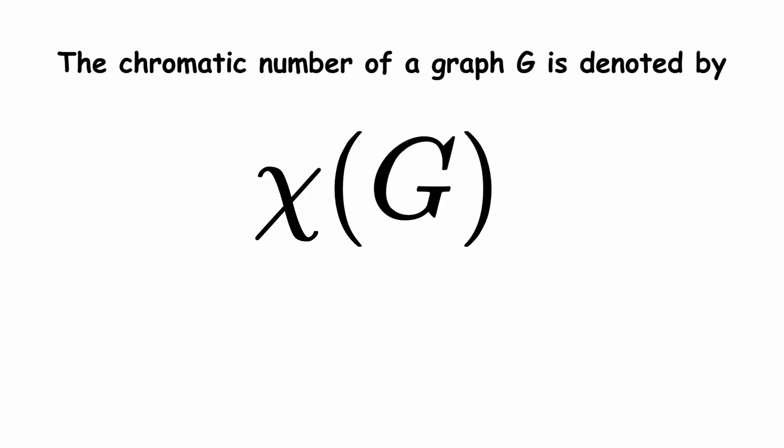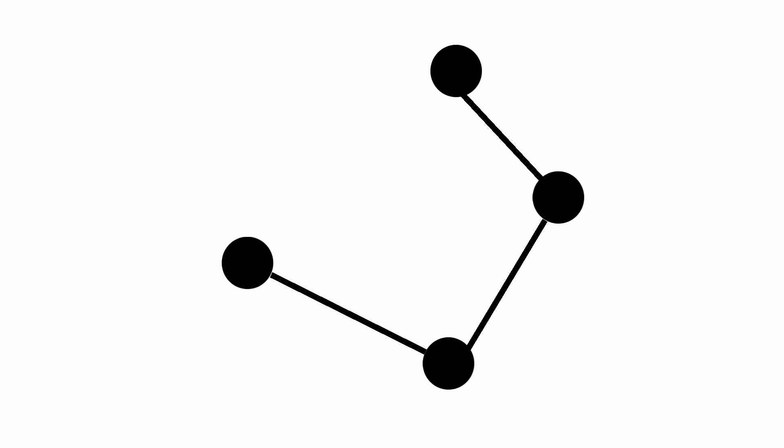The chromatic number of a graph g is denoted by chi of g, with the Greek letter chi.